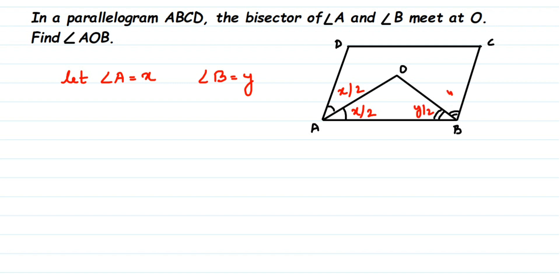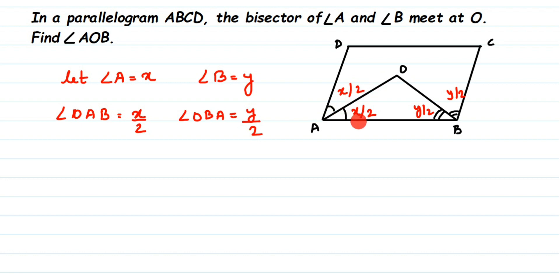So angle OAB will be equal to X by 2, and angle OBA will be equal to Y by 2. This is because each is half of the whole angle. Angle OAB is this angle and OBA is this angle.